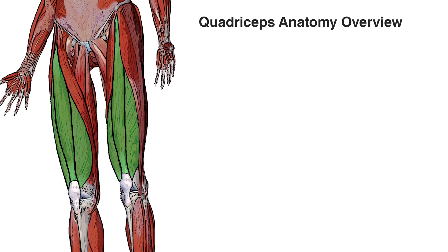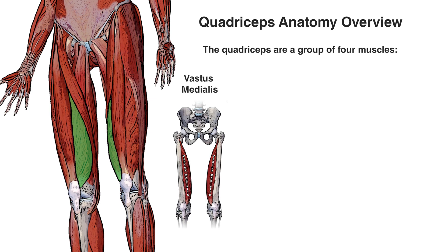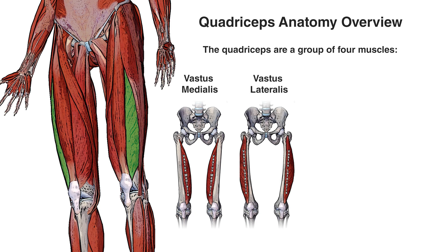Highlighted in green here we can see the quadriceps muscle group, commonly referred to as the quads. It's a group of four large muscles located on the front of the thigh. The most medial quadricep muscle is the vastus medialis, and its distal fibers are commonly referred to as the vastus medialis oblique or VMO for short. The most lateral quadricep muscle is the vastus lateralis — the largest and most powerful muscle in the quadriceps group — located right next to the iliotibial band.